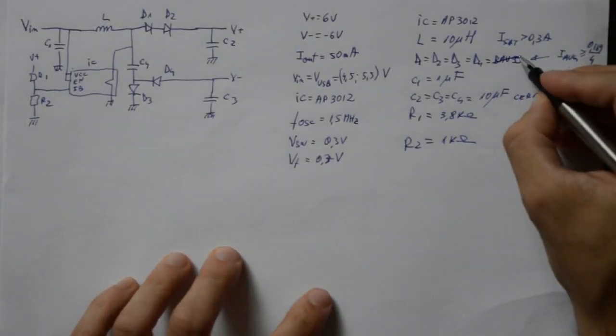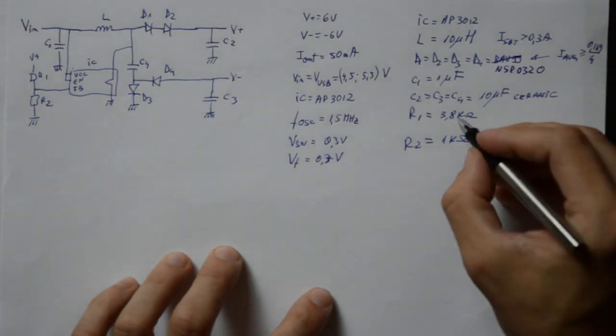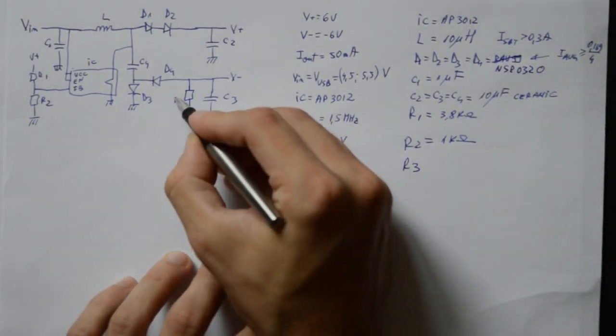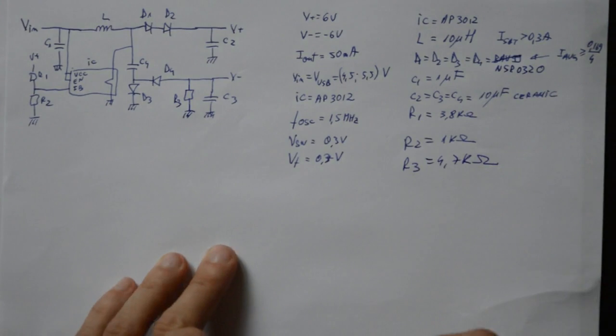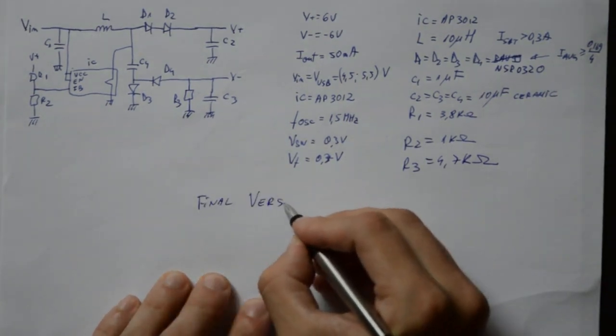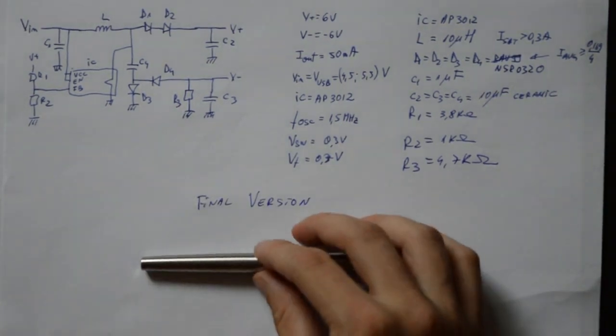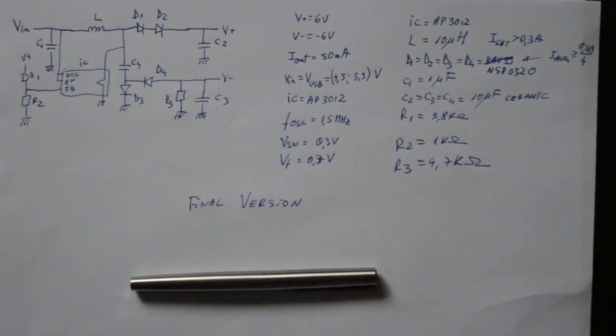So, I will change the feedback resistors on the positive rail to 1 and 3.8 kOhms, as in the first attempt. And on the negative rail, I will add a fixed 4.7 kOhms resistor, as a static load. So, the final schematic will look like this.